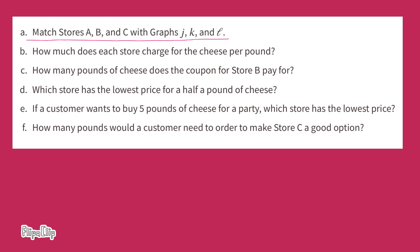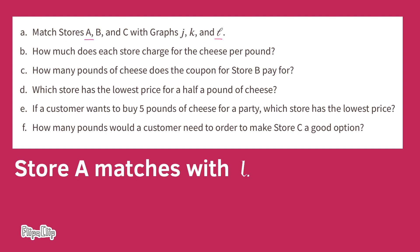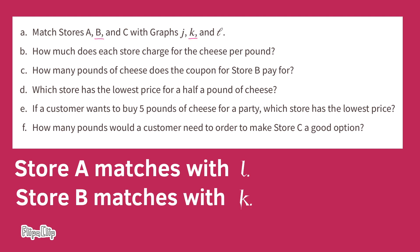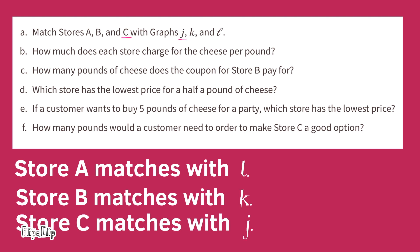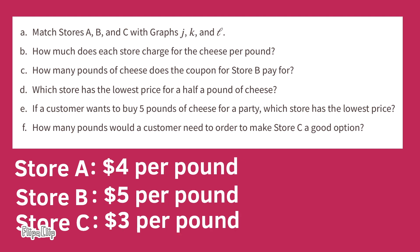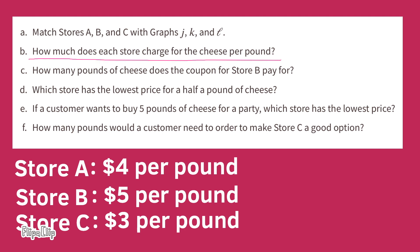Matching the stores to the graphs: Store A matches with line L, Store B matches with line K, and Store C matches with line J. Store A charges four dollars per pound, Store B charges five dollars per pound, and Store C charges three dollars per pound.